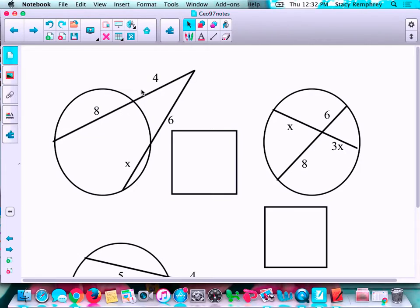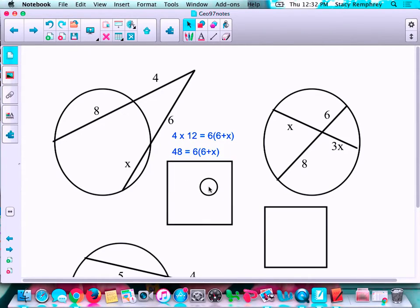Okay, so here I have two secant segments, and the important part is external times the entire secant segment. That's where the 12 is coming from, 4 plus 8. For the other, it's 6, the external segment, times the entire segment, which is 6 plus X. I solved that equation, and I got that X equals 2.